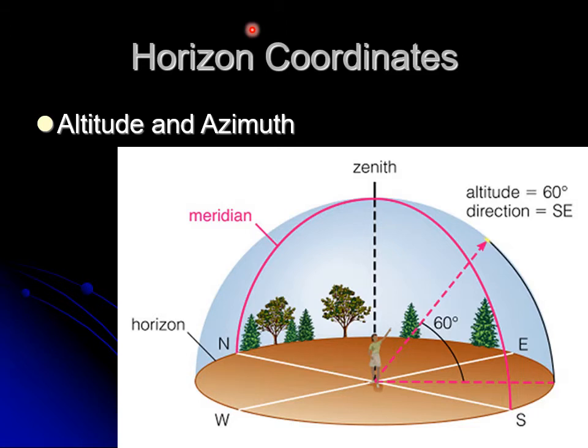If I were to say I want you to go out and look at something tonight, I would tell you what direction to face and how high up to look to see it. That's the horizon coordinates. That sounds like a fantastic thing to do, except for one problem. Earth is round.